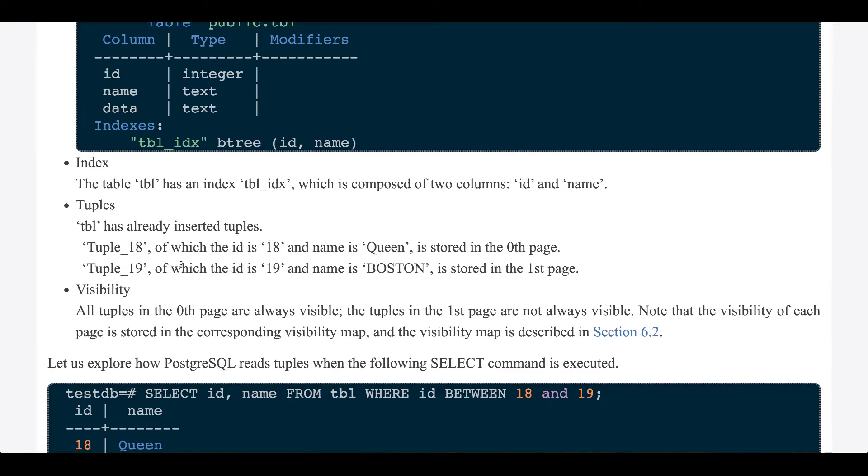Tuples: The table has already inserted tuples. Tuple 18, which has an id of 18 and named Queen, is stored on the page at index 0. Tuple 19, of which the id is 19 and the name is Boston, is stored on the page at index 1.